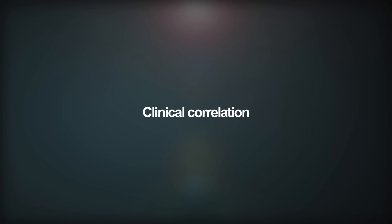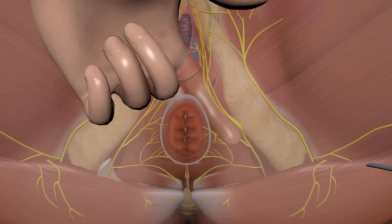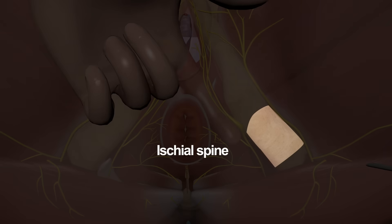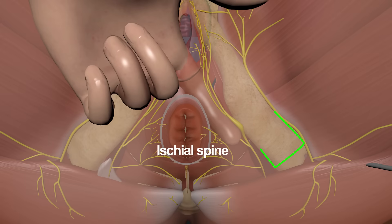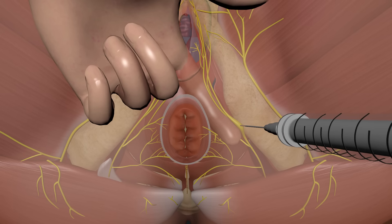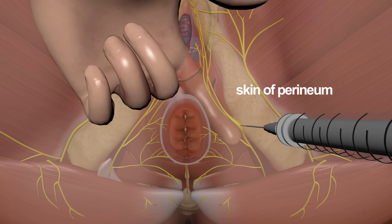Clinical Correlation – Pudendal Nerve Block: The pudendal nerve is infiltrated with a local anaesthetic where it crosses the ischial spine. The ischial spine is palpated through the vagina. A long needle is inserted through the vaginal wall and guided by a finger to the ischial spine. The needle can also be inserted through the skin of the perineum.